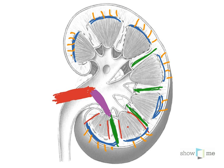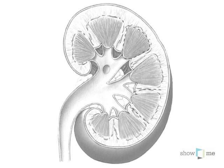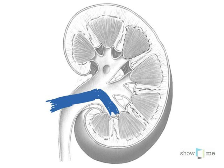Now looking at the veins, we follow essentially the same path. Using blue, we come in with a renal vein. The renal vein, depending on which side of the kidney you're on, will be longer or shorter depending on if it's a left or right kidney, but we're just looking at where the vessels go. There is no segmental vein for the kidneys, so the vein continues all the way through without changing its name as we are inside the kidneys.